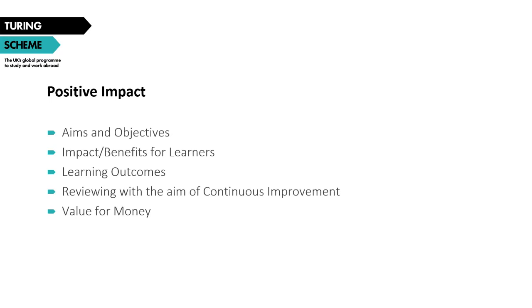This question is also where you talk about how outcomes are verified and measured. There is no requirement under Turing for formal recognition in the form of credits — you can include other types of recognition, including non-formal recognition. The fourth question asks you to describe what procedures you will put in place to continuously review your project's performance. Evaluation should be an ongoing process — for example, you may want to carry out evaluation after the first set of international activities to see if improvements can be made for subsequent activities.